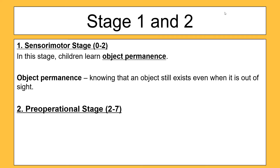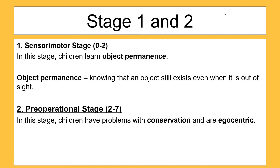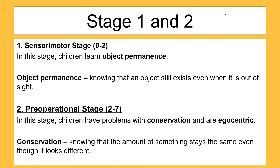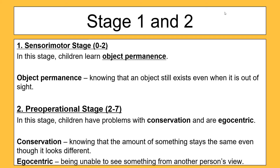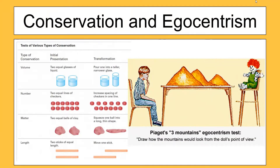When a child moves into the second stage, the pre-operational stage from ages two to seven, there are a few more cognitive problems. Those problems are conservation and egocentrism. So children have difficulties with these two things. Conservation is knowing that the amount of something stays the same even though it looks different — essentially holding on to information for a brief period of time, which children really can't do. Being egocentric is when children are unable to see something from someone else's point of view; they can only see things from their own mindset.